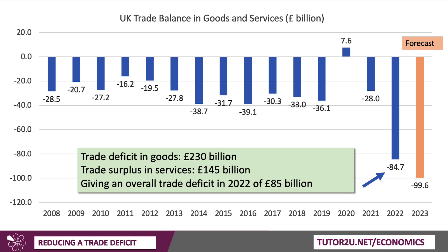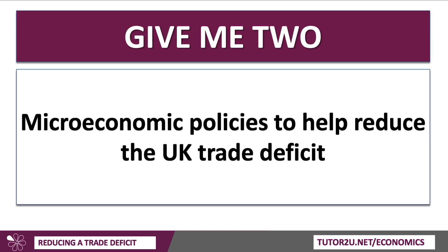The context here is the UK. Here's the trade balance in goods and services each year in the UK since 2008. You can see that in each year, other than 2020 — obviously an abnormal year because of the pandemic — the UK runs a structural trade deficit in goods and services overall. In 2022, the trade deficit in goods was huge: $230 billion, partly offset by a very large surplus in services. The UK has a comparative advantage in things like business services, creative industries, and financial services. The surplus there was $145 billion, but net trade — X minus M — was an $85 billion deficit. The forecast for 2023 is that that deficit will get bigger, so it begs the question: what kind of policies might be effective in helping to lower this significant trade imbalance?